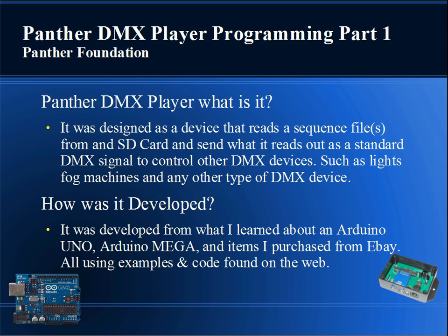So the Panther — what is it? It is a device that reads binary values from a sequence of files from an SD card. It then transmits those values over standard DMX signal to control other DMX devices such as lights, fog machines, and any other type of DMX receiving device. It was developed from what I learned using an Arduino Uno and an Arduino Mega, items I purchased off eBay, as well as some snippets of code and libraries that I found on the web.